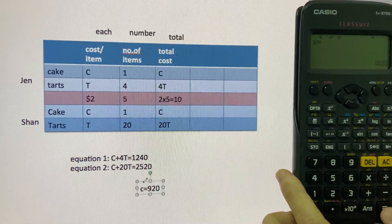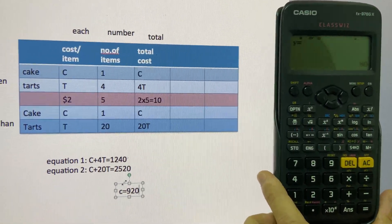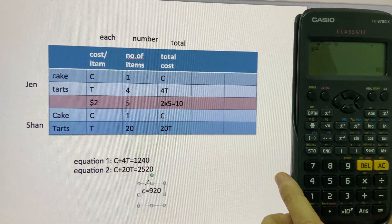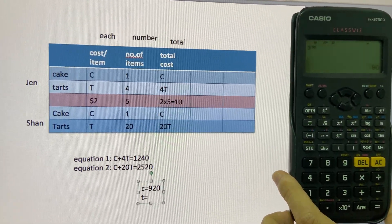And you press the equal sign one more time. The Y is equal to 80. So Y in this case is our T. So T is equal to 80.